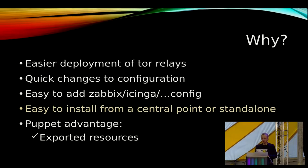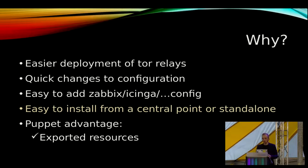You also have a standalone version. You create a Puppet file with all definitions on the server — for example, an Nginx instance for a hidden service, a hidden service definition, and the packages for Tor and Nginx. You download all the modules and can install everything from one single command line on the server with a standalone instance.